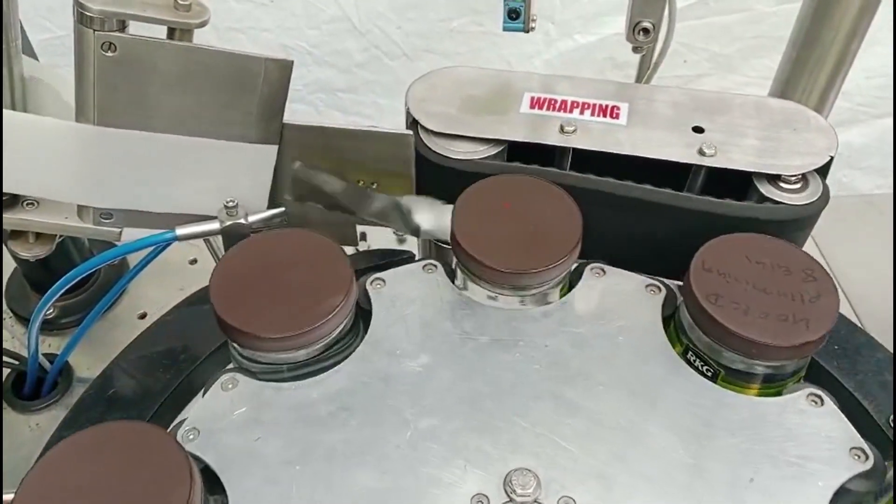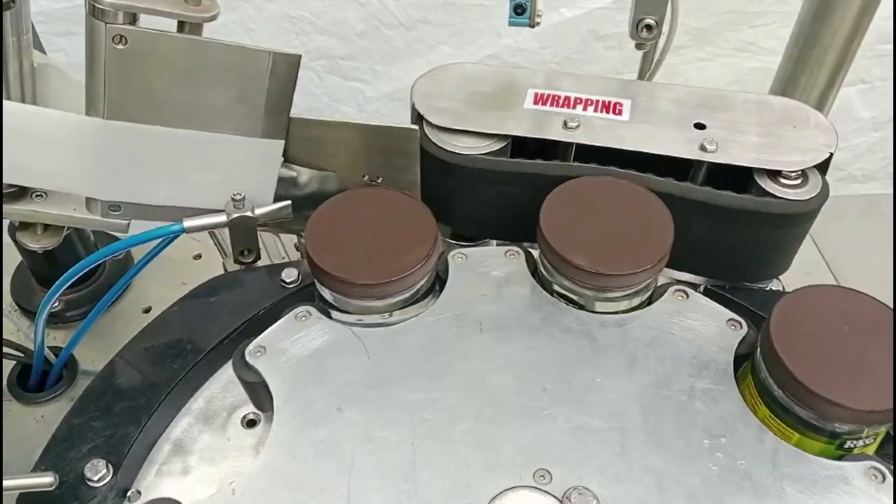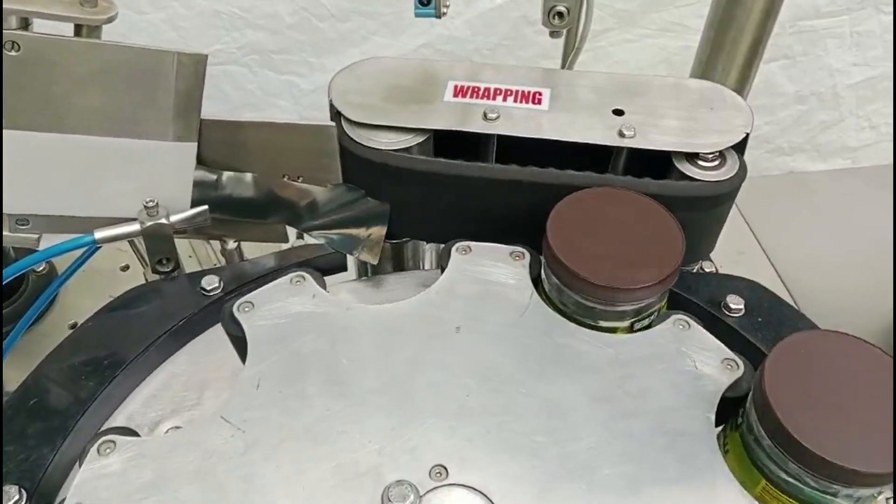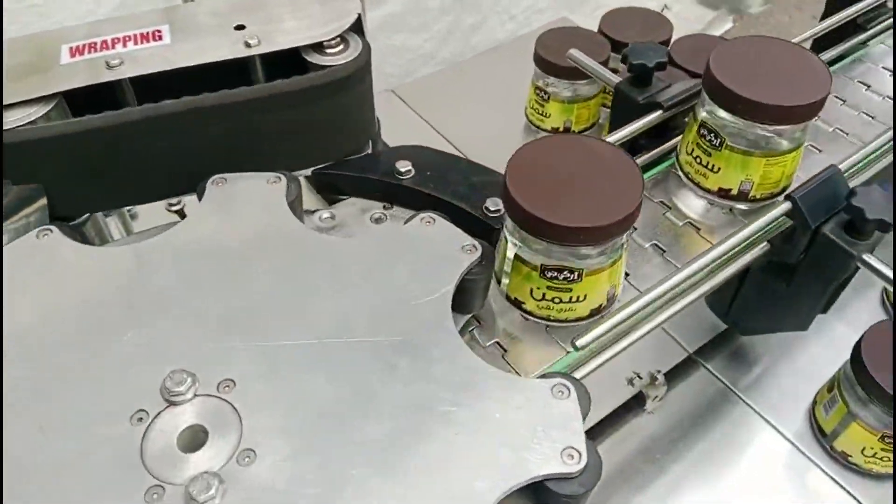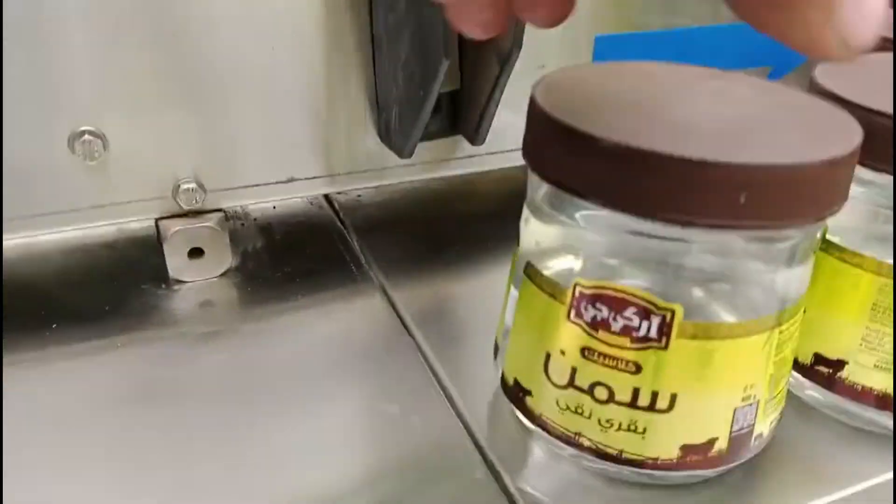These machines ensure precise alignment and placement of labels on containers and can operate at high speeds, making them suitable for mass production and high-volume packaging lines.